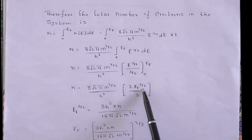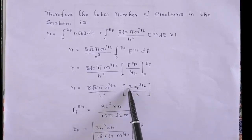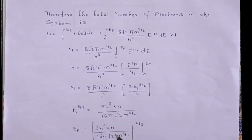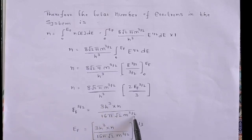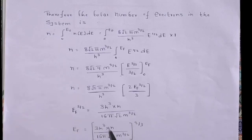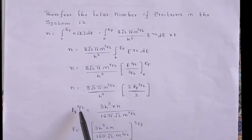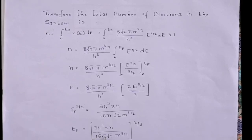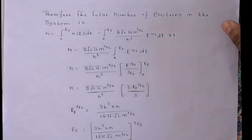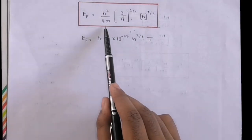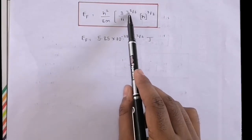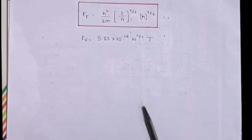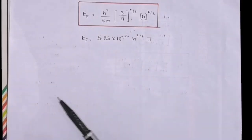We want the Fermi energy expression, so we keep E_F^(3/2) on one side and send all remaining terms to the other side: E_F^(3/2) = (3h³ × n) / (16π√2 × m^(3/2)). Since we need E_F and not E_F^(3/2), we raise both sides to the power 2/3: E_F = [(3h³ × n) / (16π√2 × m^(3/2))]^(2/3). Simplifying, this becomes E_F = (h² / 8m) × (3n/π)^(2/3).